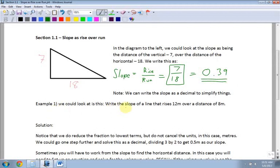Let's look at example 1. Write the slope of a line that rises 12m over a distance of 8m. So again, we have the slope, which is equal to the rise over the run, which is equal to the rise is 12, and the run is 8. Now remember these are in meters. And again, there is my fraction. Now, it's always a good idea to reduce your fraction.